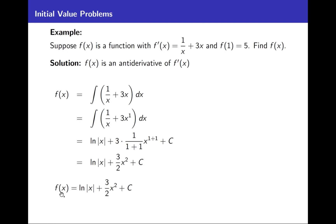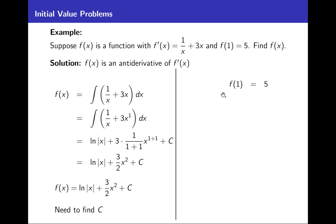So that tells us what our f of x looks like, except we don't know what number c is. We've got to figure out what that constant is. Right now c could stand for any number. To continue and solve this problem completely, we need to find c. To find c, that's where we use the one piece of information we haven't used yet — the so-called initial value: the fact that f of 1 equals 5.